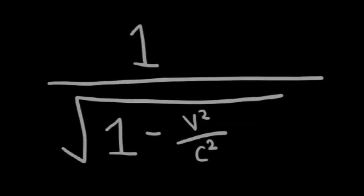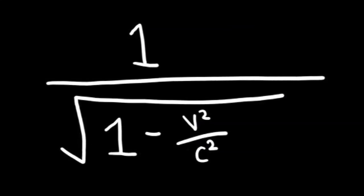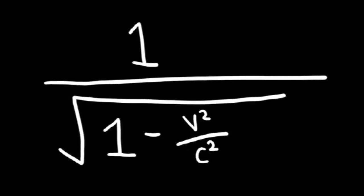When you work through the maths of all that and what it actually implies, one of the quantities that comes out all over the place is the same mathematical expression: 1 over the square root of 1 minus v squared over c squared, where v is the speed at which the reference frame is moving and c is the speed of light. This comes up so often that it's actually given its own symbol — it's called gamma.